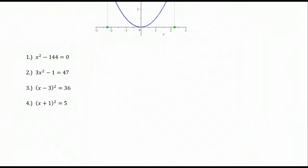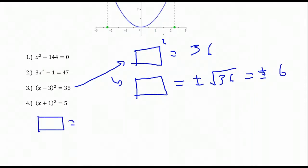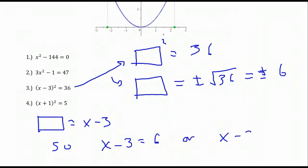We'll do the last two examples — these ones are slightly more complex, but again, you want to look at the overall form. It's some quantity being squared equals a positive number. In this case, it's not just x; it's the polynomial x minus 3 which is being squared, and this equals 36. Whatever is being squared, the conclusion from the square root property is that something has got to be plus or minus the square root of 36, which is plus or minus 6. What we're squaring this time is the polynomial x minus 3. So we conclude x minus 3 equals positive 6 or x minus 3 equals negative 6.